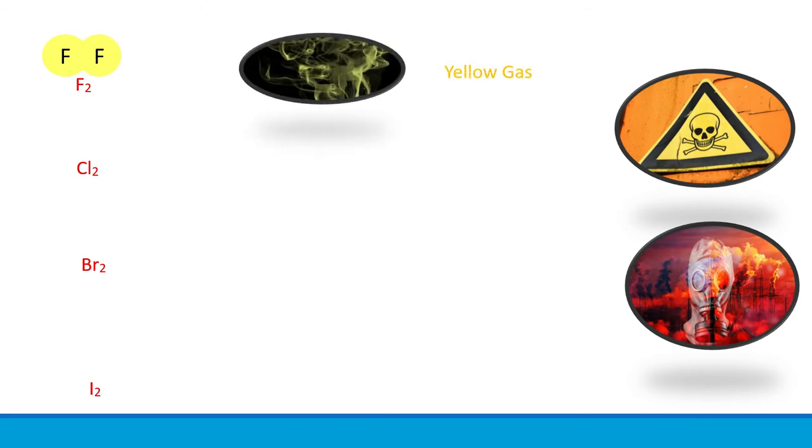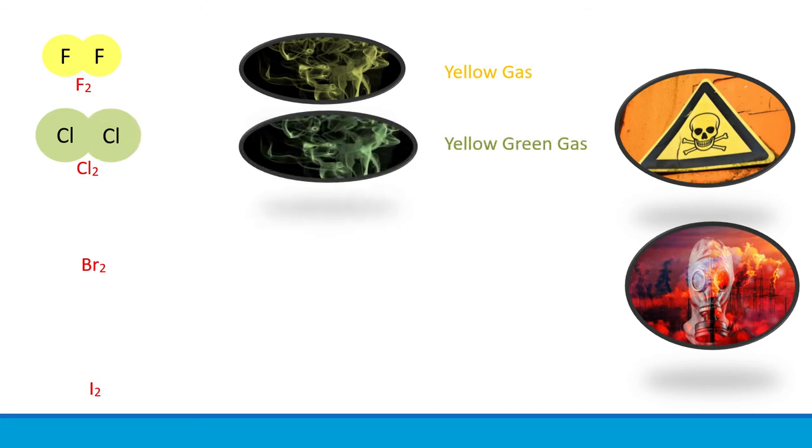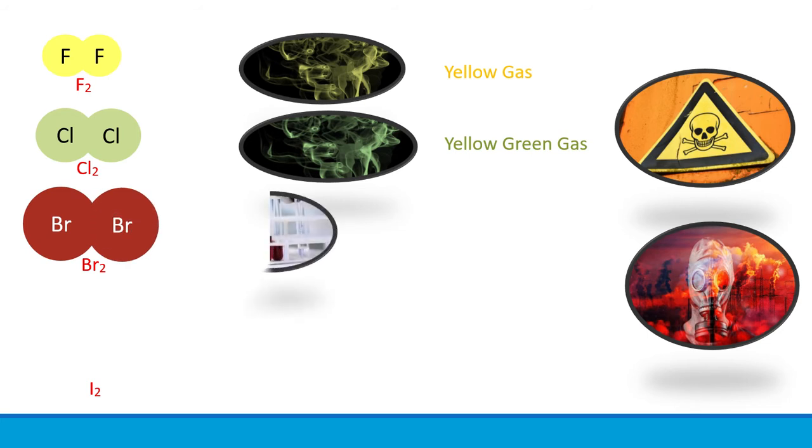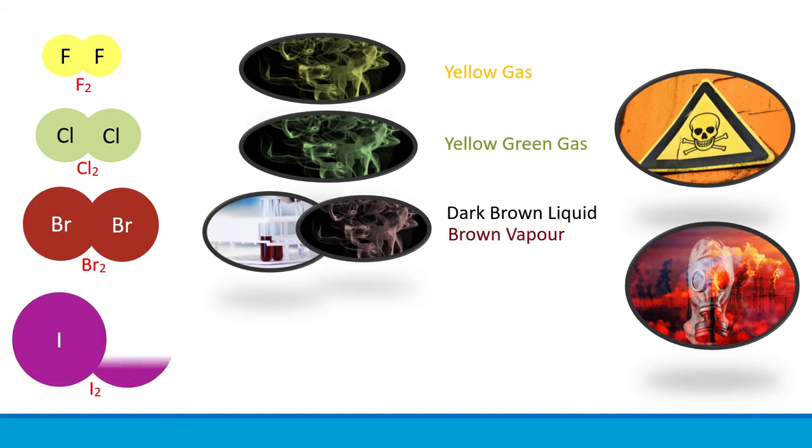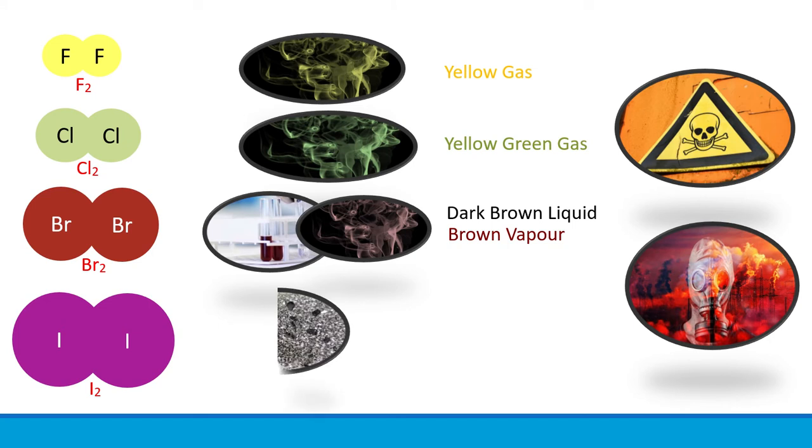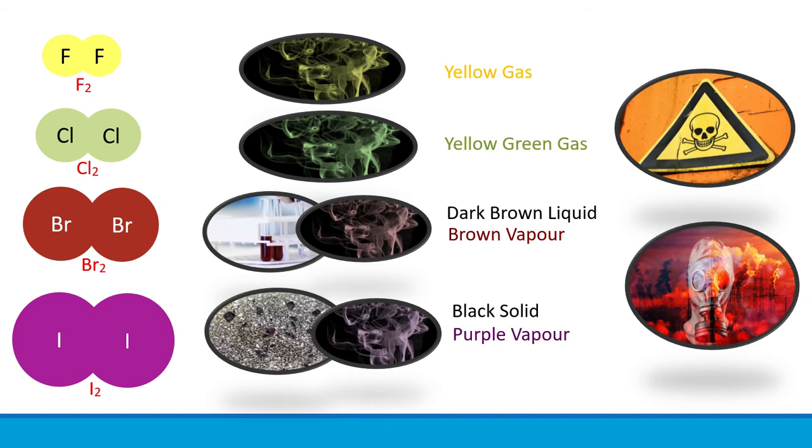Chlorine appears as yellow-green gas at room temperature. Bromine exists as dark brown liquid; however, when heated, bromine turns into brown vapor. Iodine appears to be black solid at room temperature and turns into purple vapor when heat is applied on it.